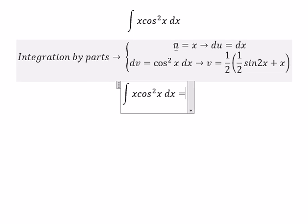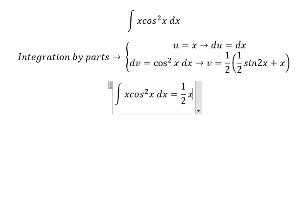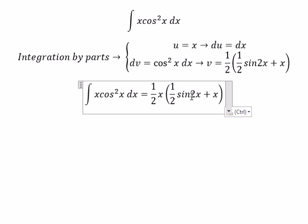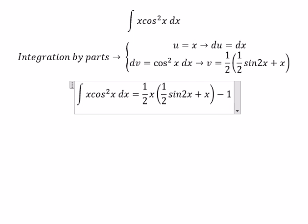So we have u multiplied with v, and we have the negative 1 over 2, and we have the integral of this one.